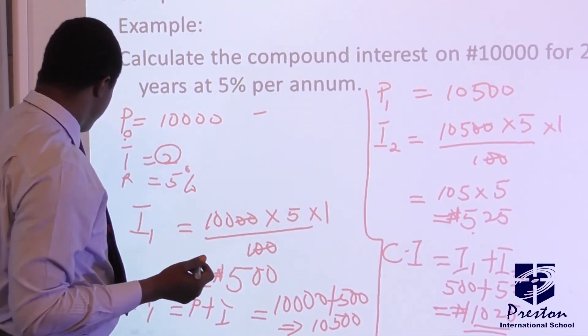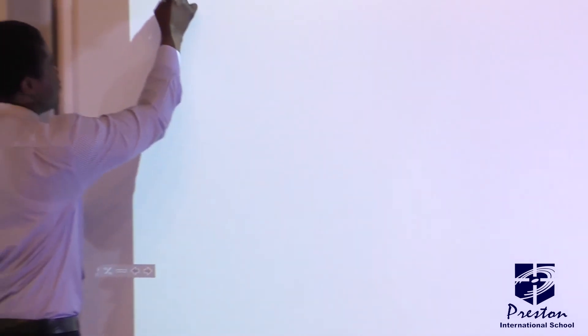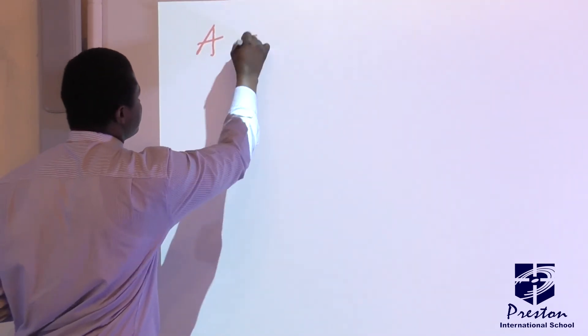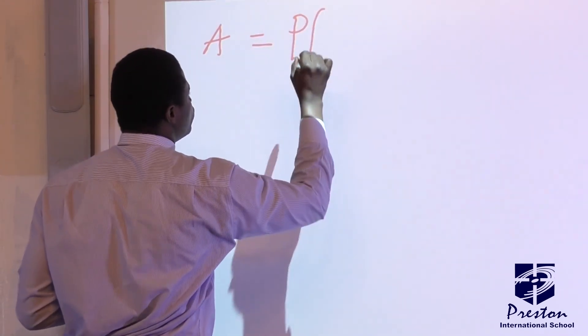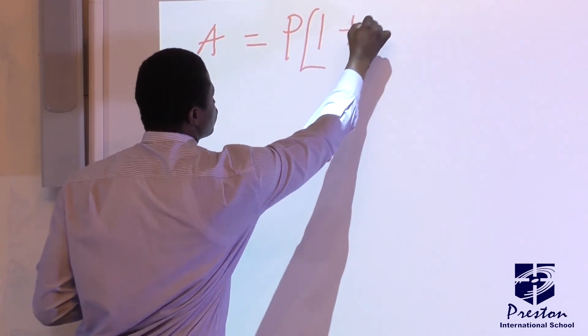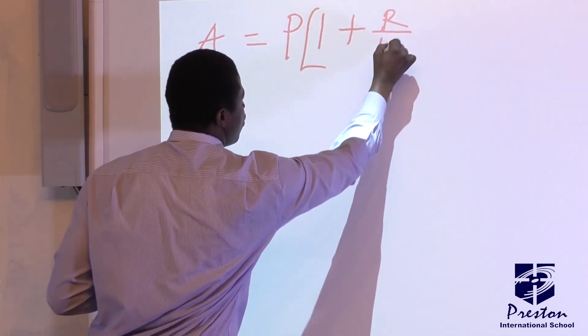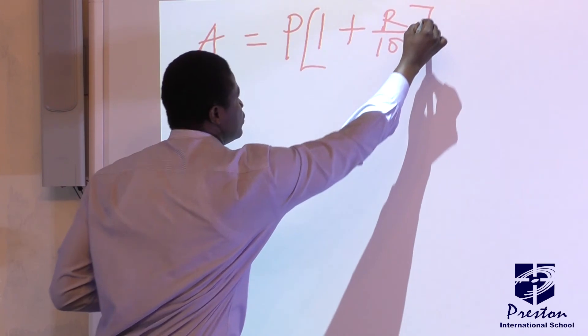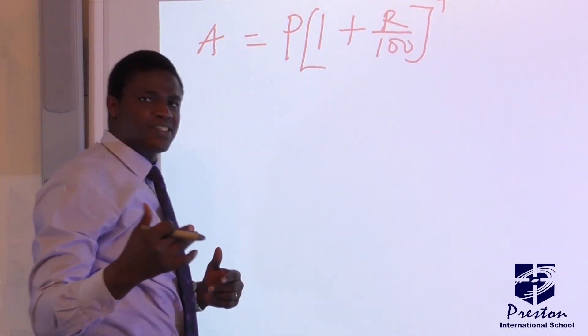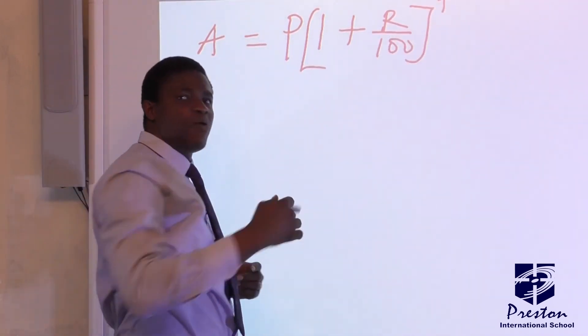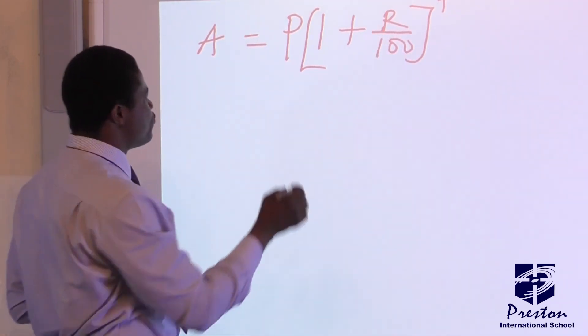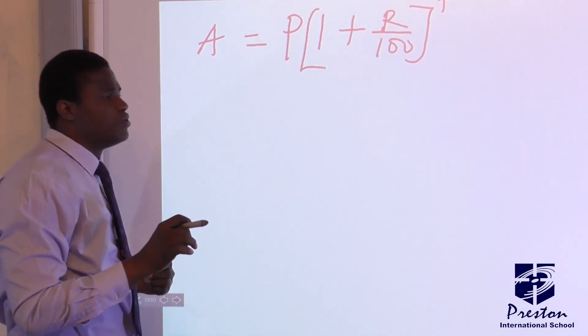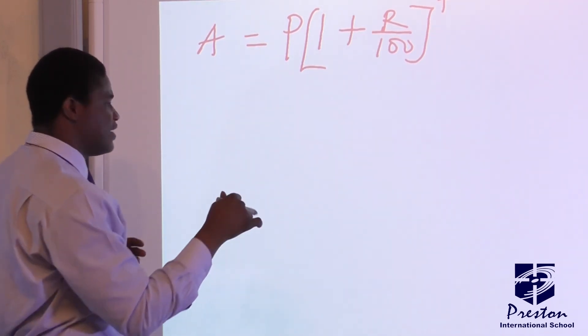And we also have formula method to calculate compound interest. Now look at the formula method. That is, amount is equal to principal into 1 plus R over 100 raised to power T. Take note of this thing in some cases. You may see this T in form of N, but it is still talking about time, the period. So if you use this method for the same question we solved, you will get the same answer.